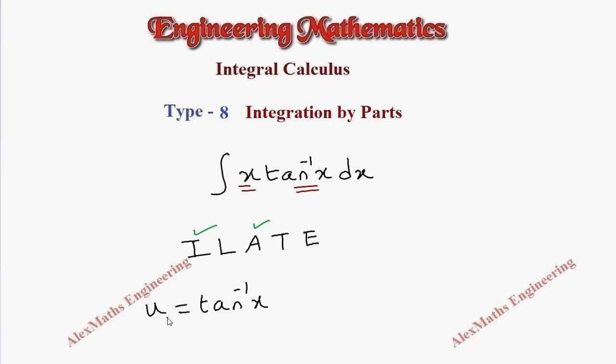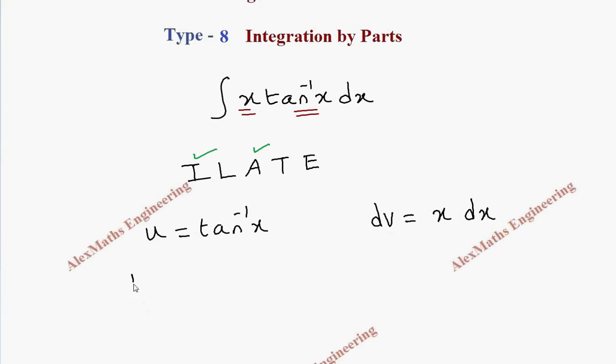And dv will be the other function x along with dx. Here we find du which is 1 by 1 plus x square into dx, differentiation of tan inverse x, and the integration of x is x square by 2.